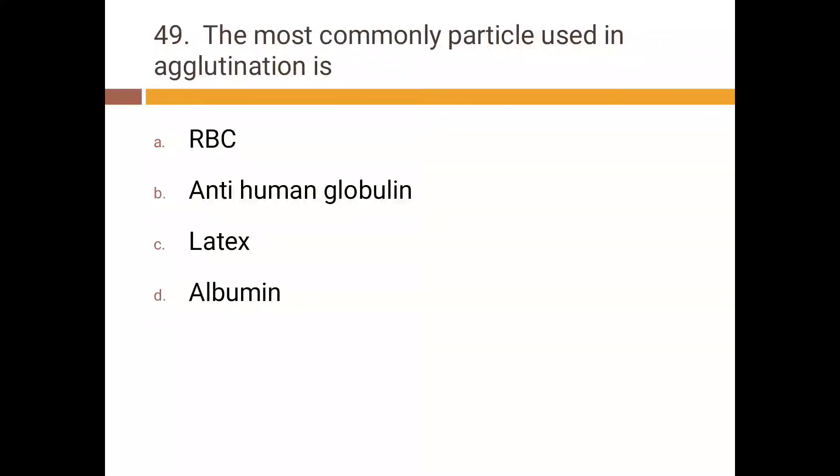The most commonly used particle in agglutination is: a) RBC, b) anti-human globulin, c) latex, d) albumin. Correct answer is c) latex.